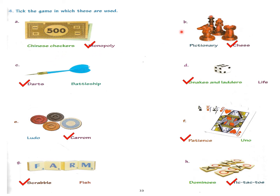Now B, you can see these chess pieces. These are the pieces with which we play chess, so you have to tick mark chess here. Then these are darts which are thrown on the board. These darts are used in the target game, so we will tick mark darts.